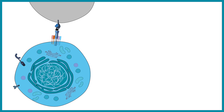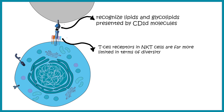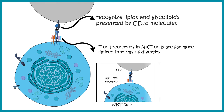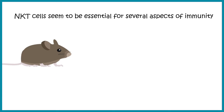The T cell receptor of NKT cells is less diverse compared to T helper cells. They generally recognize lipid or glycolipid-type antigens presented on a CD1 molecule, which is not exactly MHC but a MHC-like molecule. So the way NKT cells recognize antigen is very different from T helper cells, and they have limited receptor diversity.